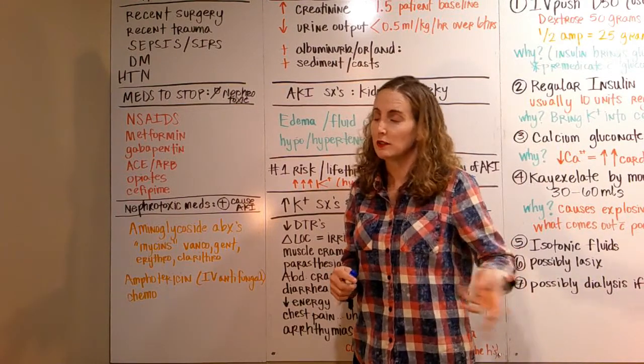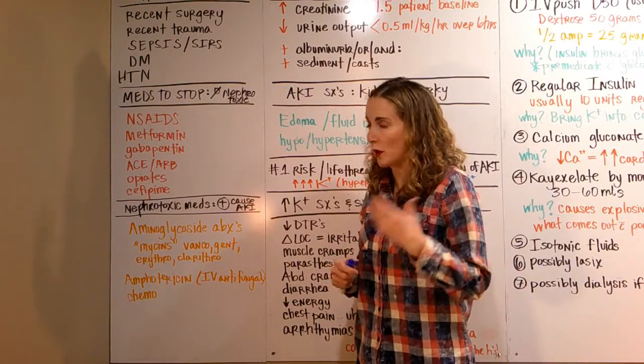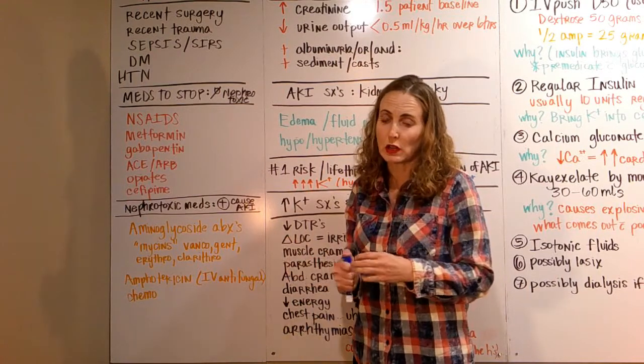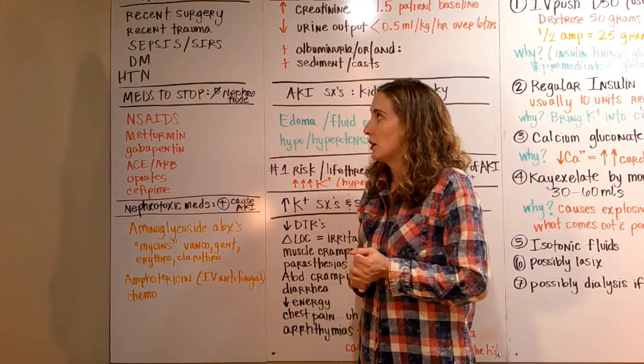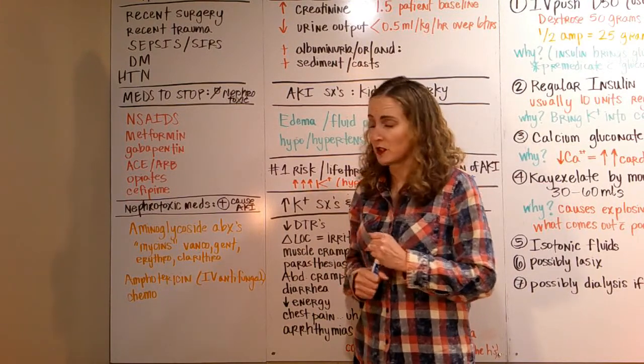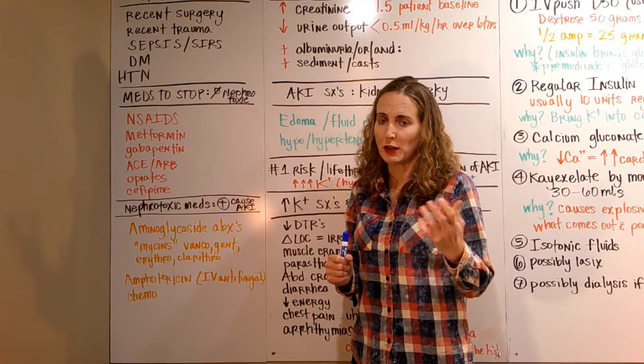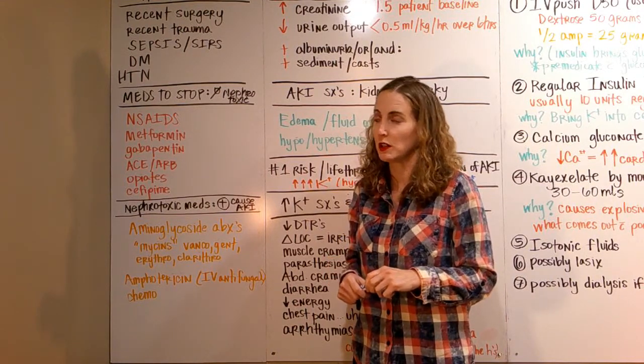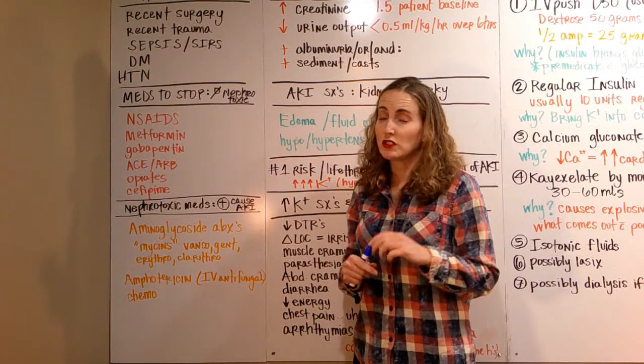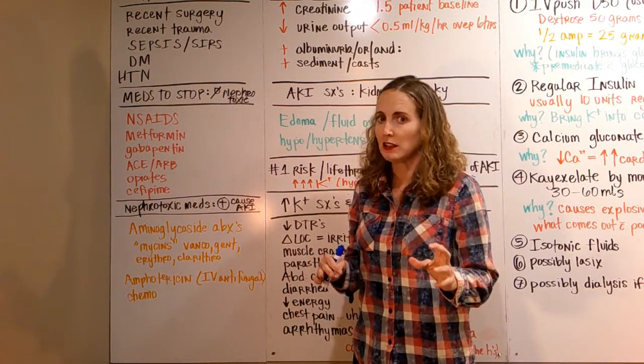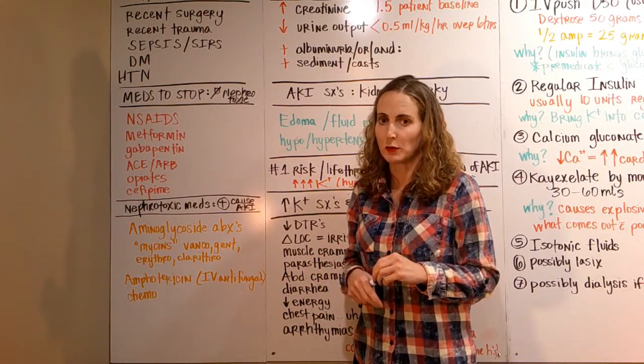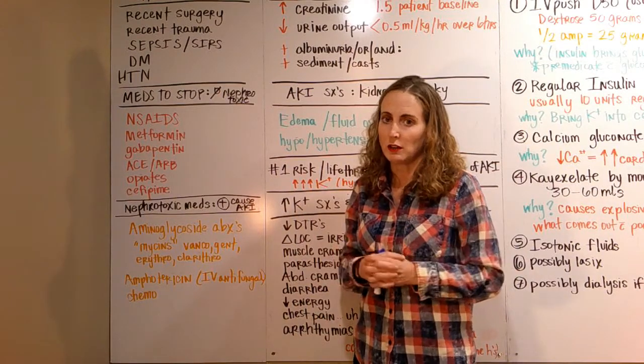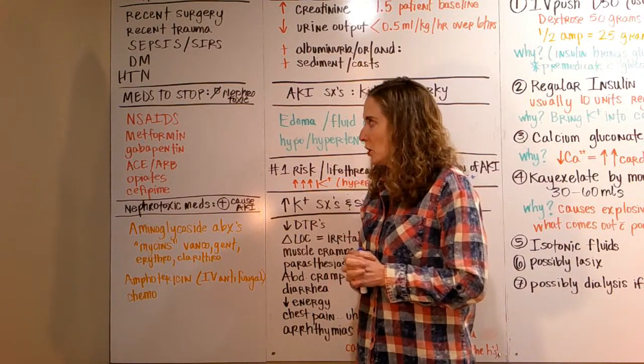Sepsis or SIRS, diabetes mellitus patients, and hypertension. Those are our medical diagnoses or chronic illnesses that can predispose us to an acute kidney injury. Today's lesson is not about chronic kidney disease at all, that's totally separate. We're talking about an acute kidney injury that comes on suddenly.